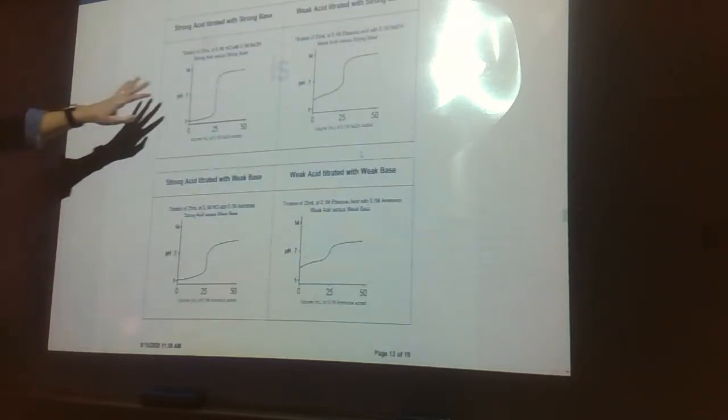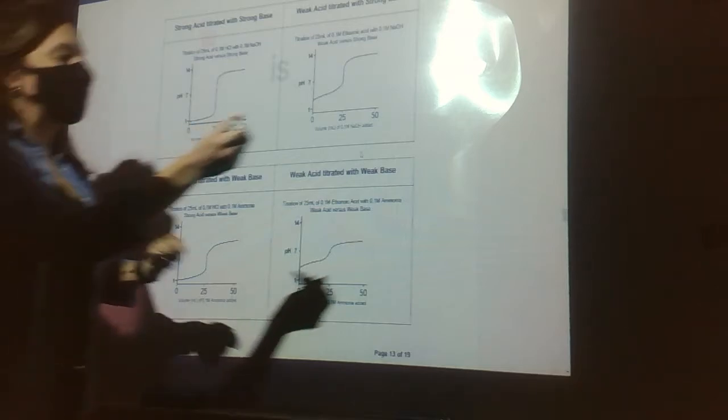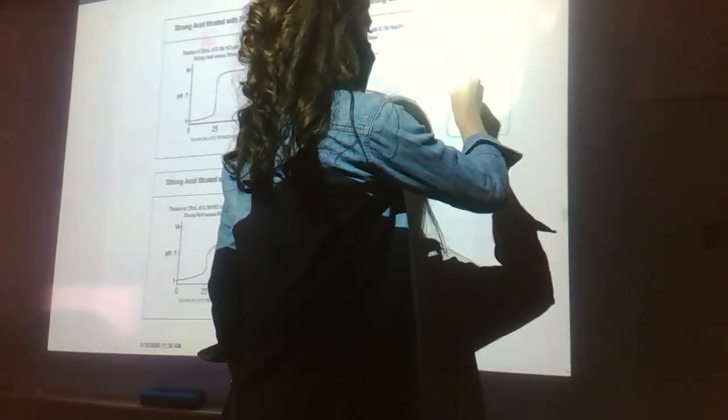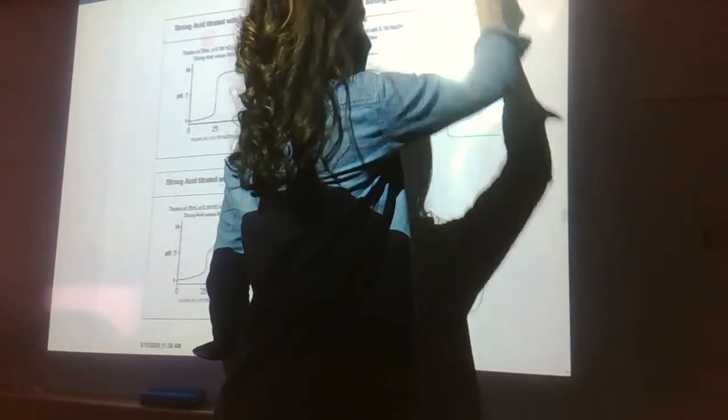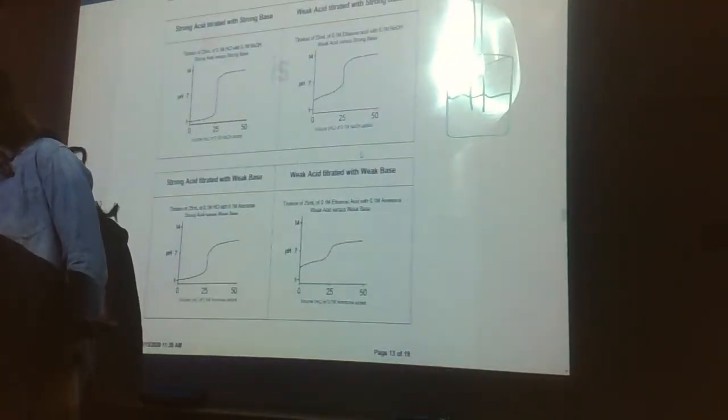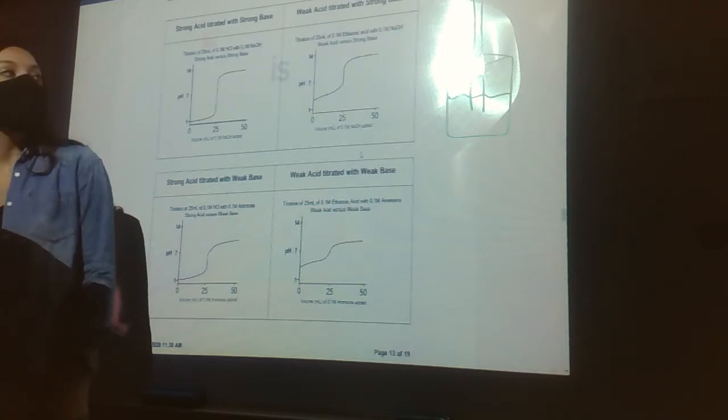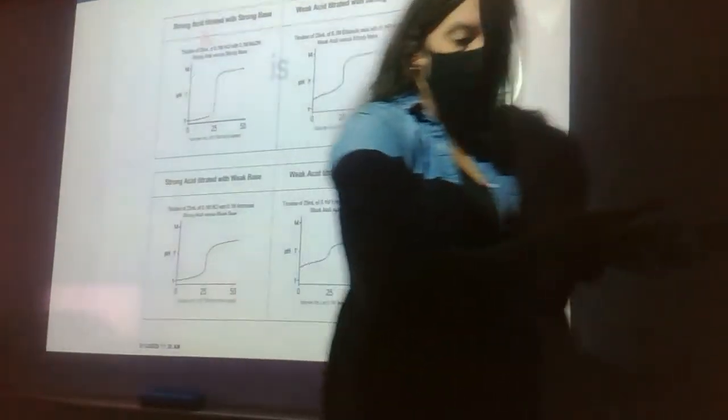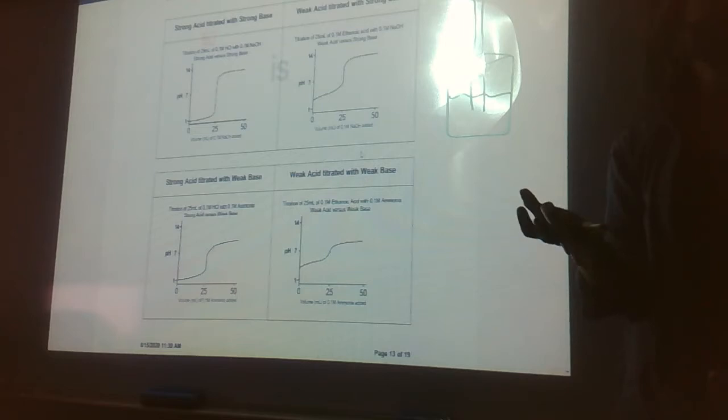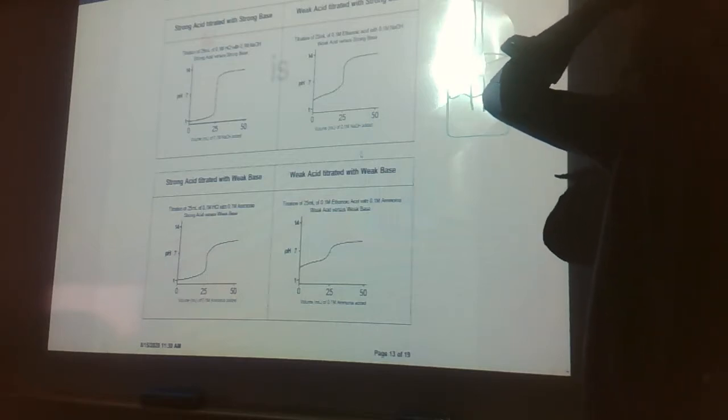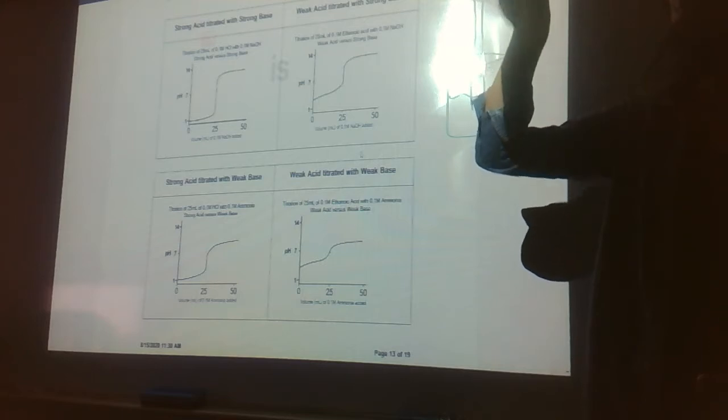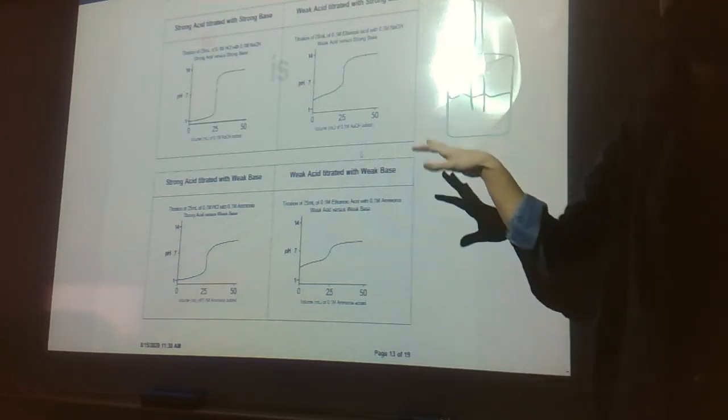This first graph is a strong acid with a strong base. This is the one that we've seen before. Titrations usually have a beaker and a burette. If you're a senior, you've done this in Chem 1A. Juniors, you didn't get to because we did acids and bases at home. In a titration, what you do is you start with a beaker of usually your acid and you put an indicator in your acid. We'll talk about indicators in a minute. And you add base from a burette slowly. The reason you're doing that is because you want it to go slow so that you can tell when the equivalence point has been reached. And that's when your indicator changes color.